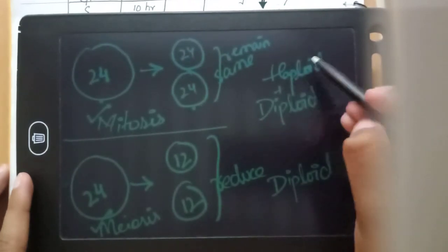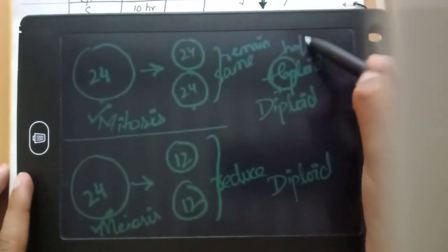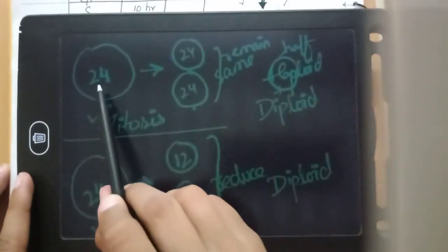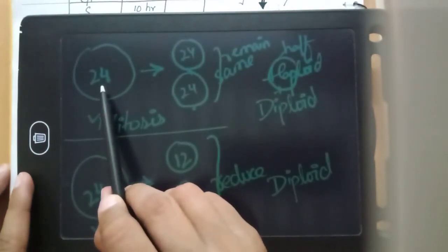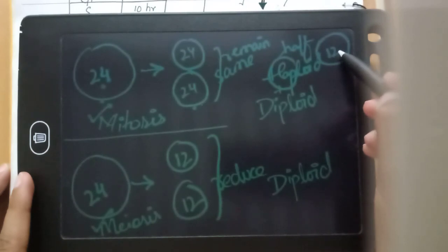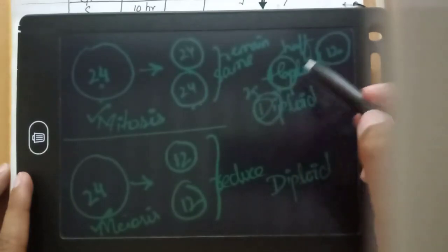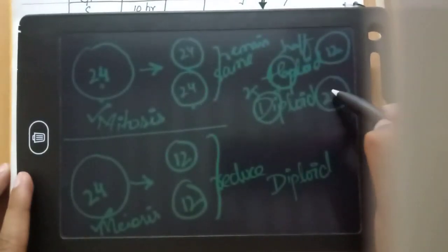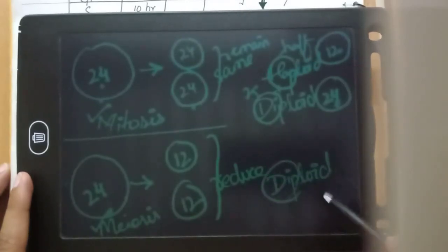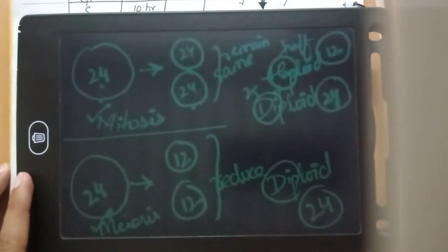What is haploid? It means half — the number of chromosomes is half. For example, if we have 24 chromosomes in a cell, half would be 12. A haploid cell has 12 chromosomes. A diploid cell has the full number — double, meaning 24 chromosomes.